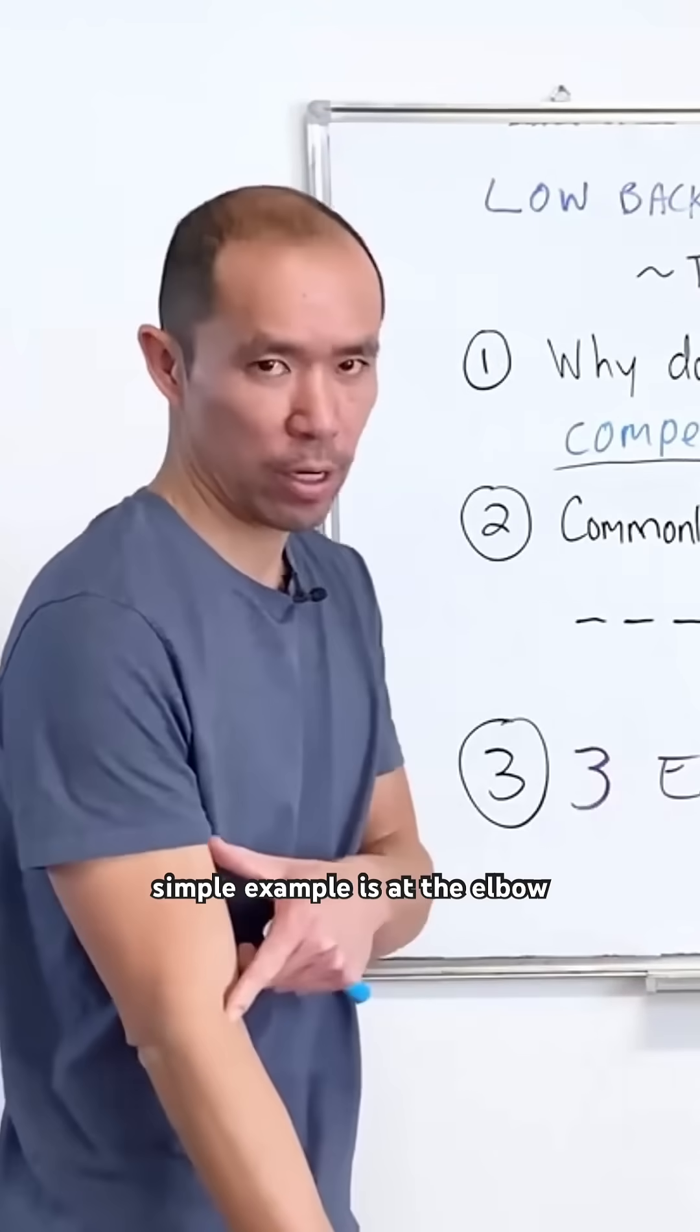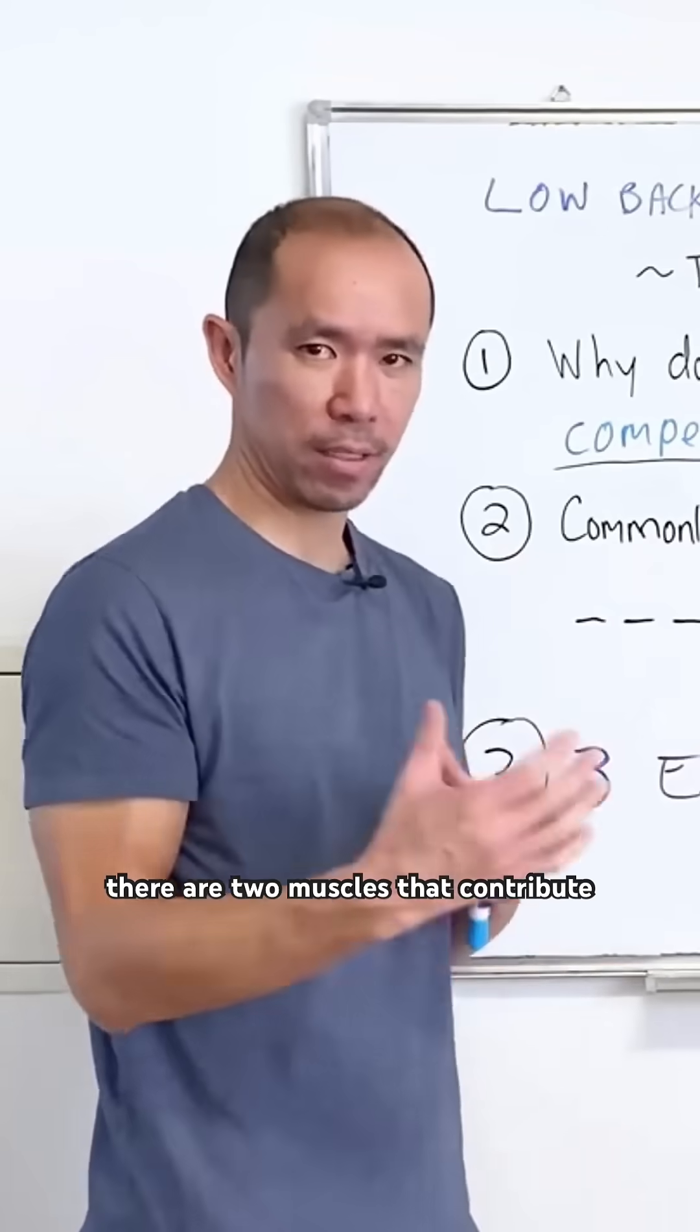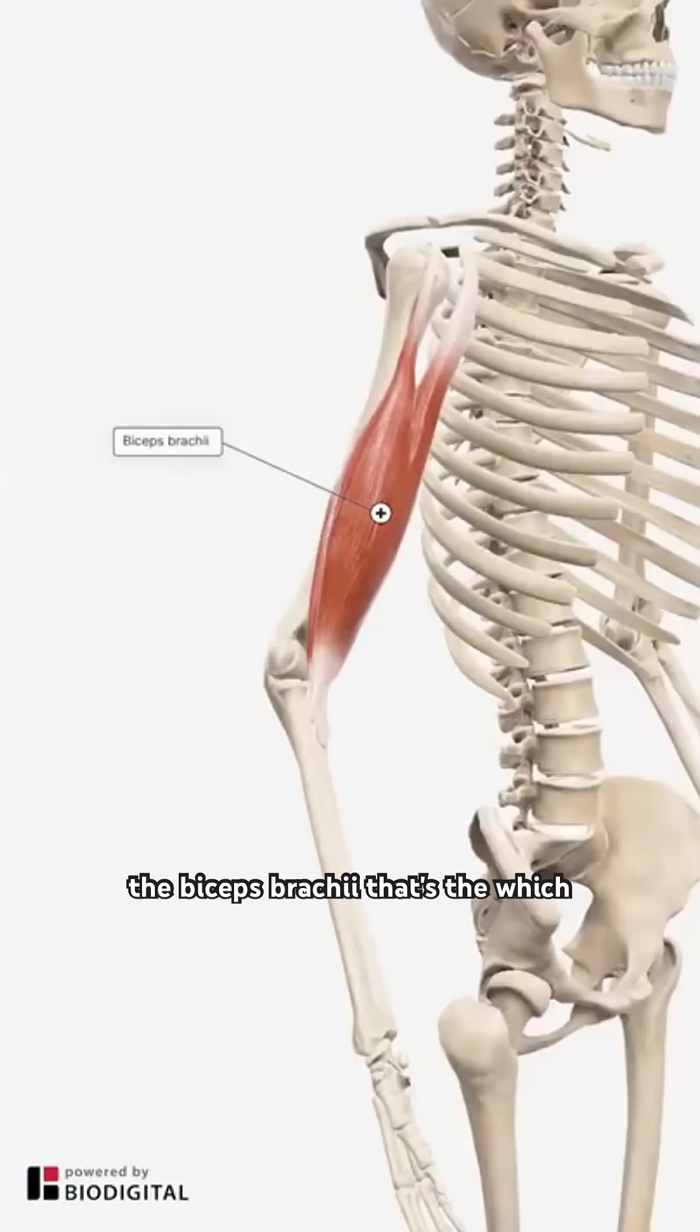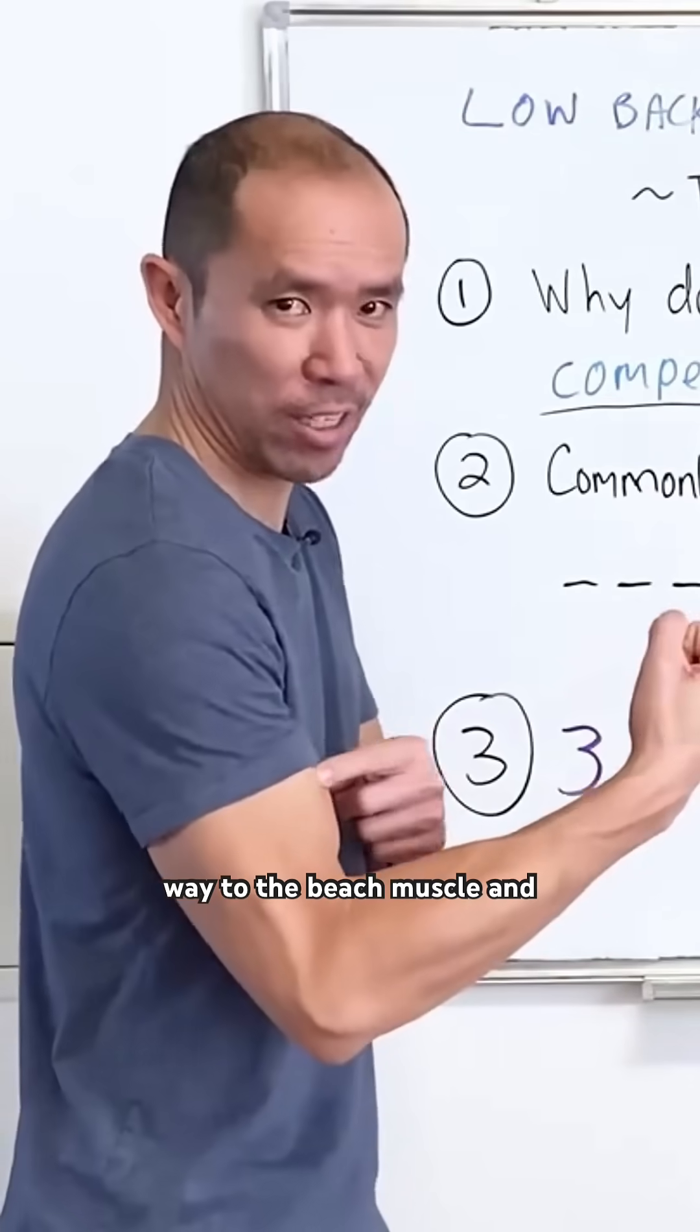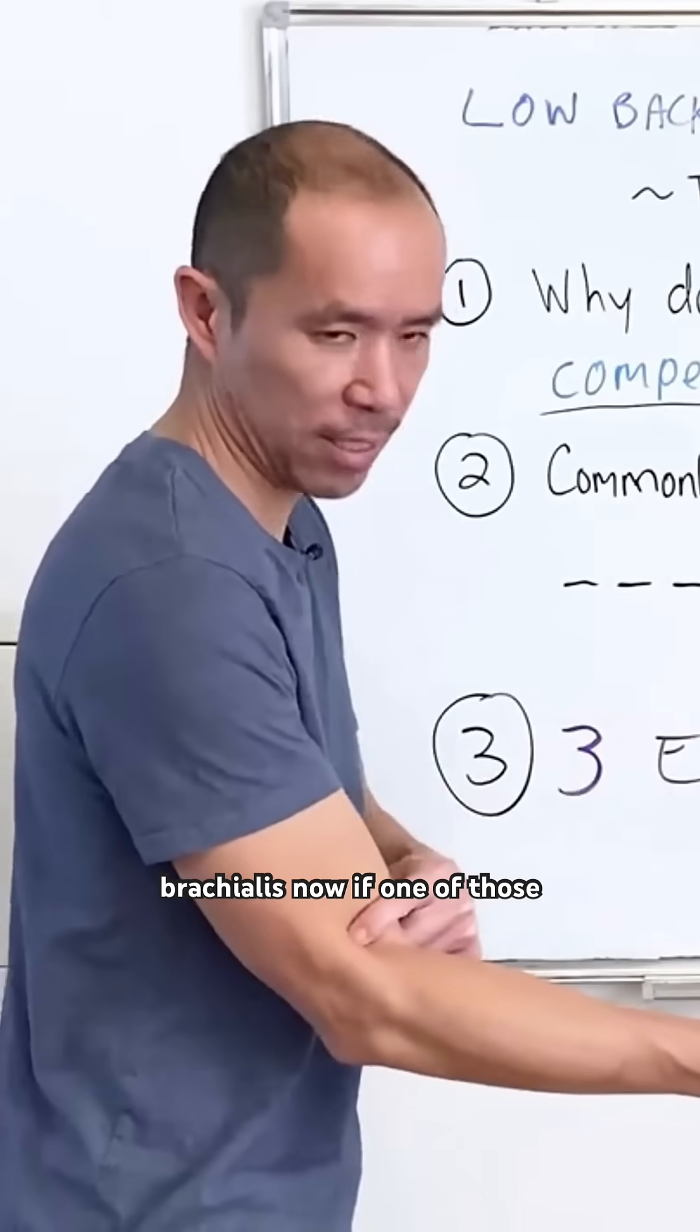A really simple example is at the elbow here. If you're doing bicep curls, there are two muscles that contribute to that the most. We've got the biceps brachii, that's the which way to the beach muscle. Now underneath that we've got a muscle that's even bigger called the brachialis.